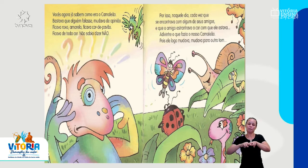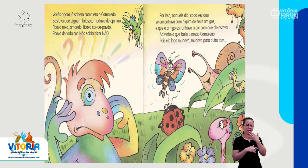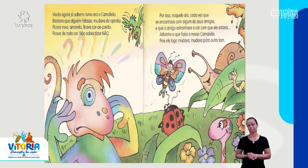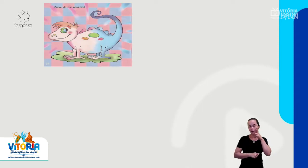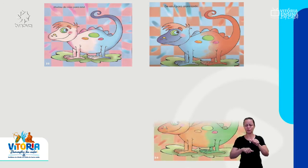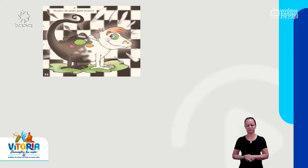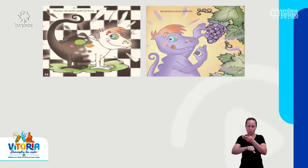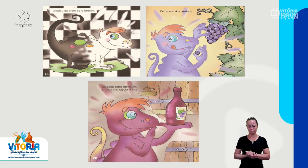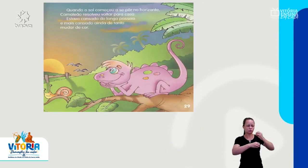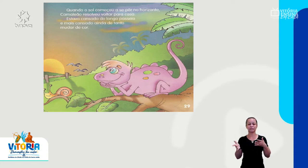Por isso, naquele dia, cada vez que se encontrava com algum de seus amigos e que o amigo estranhava a cor com que ele estava, adivinha o que ele fazia? Pois é, ele logo mudava. Mudava para outro tom. Mudou de rosa para azul, de azul para alaranjado, de laranja para verde, de verde para encarnado. Mudou também de preto para branco, de branco virou roxinho, de roxo para amarelo, e até para cor de vinho. Quando o sol começou a se pôr no horizonte, camaleão resolveu voltar para casa. Estava cansado do longo passeio e mais cansado ainda de tanto mudar de cor.